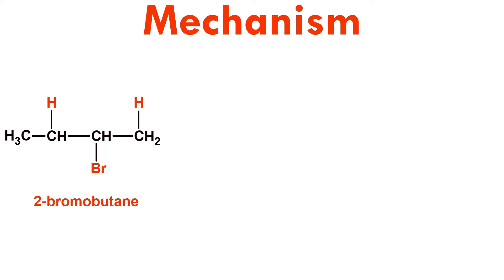Now let us delve a little bit deeper into the mechanism. Consider the structure of 2-bromobutane. The carbon directly attached to the leaving group bromide is referred to as an alpha-carbon, while the carbons connected to it are denoted as beta-carbons. In this case, there are 2 beta-carbons. The beta-carbon on the left-hand side is attached to a fewer number of hydrogens compared to that on the right-hand side.